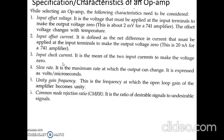Unity gain frequency is the frequency at which the open loop gain of the amplifier becomes unity. An important specification is the Common Mode Rejection Ratio (CMRR), which is the ratio of desired signal to undesired signals.